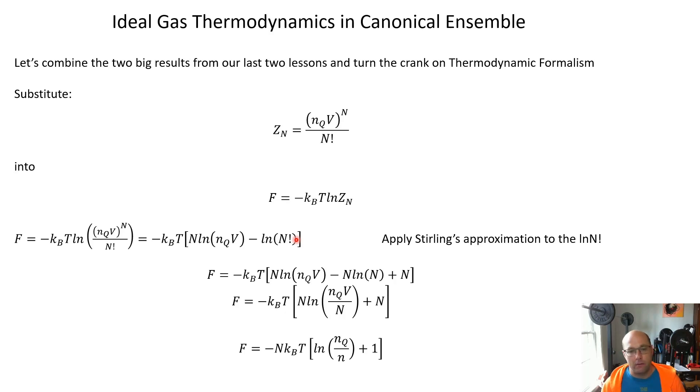How do we know that's justified here? There are a lot of opportunities where if N is not a large enough number, everything that we've done breaks down. So when we're dealing with statistical mechanics, we're almost always going to be in a position to make Stirling's approximation. So we apply it and we get F equals minus kBT times N ln(nQV) minus N ln N plus N. Don't forget to distribute that minus sign through Stirling's approximation.